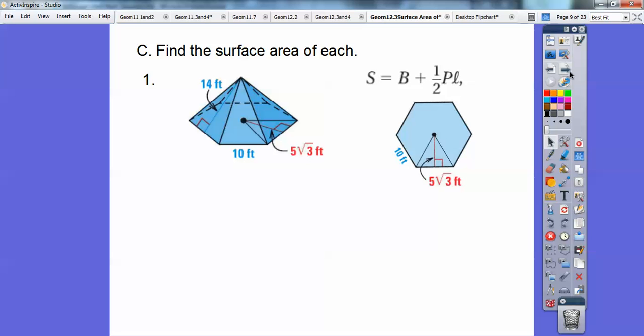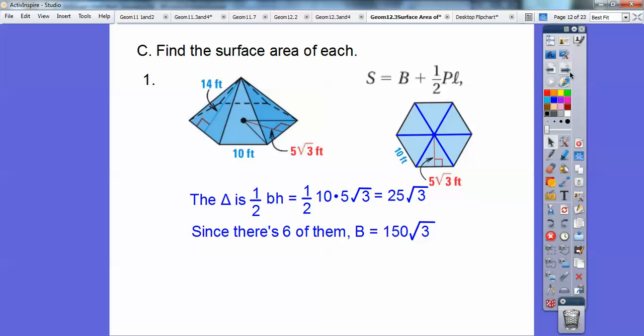That base is a hexagon right there. And since I know the height of that little triangle right there, I'm going to get the area of that little triangle. The area of a triangle is one-half base times height. So one-half ten times that five root three, and I get 25 root three. But hexagons makes up six equilateral triangles. So I'm going to multiply that 25 times six, and I get 150 root three. So the whole base is 150 root three.